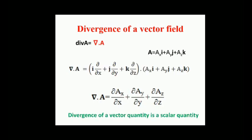Divergence operates on a vector field and produces a scalar quantity that is a measure of how much the vectors are diverging. Consider a vector field A, where A is equal to Ax·i + Ay·j + Az·k. Then divergence of A is equal to (i·∂/∂x + j·∂/∂y